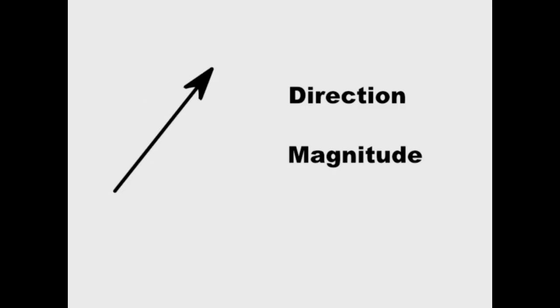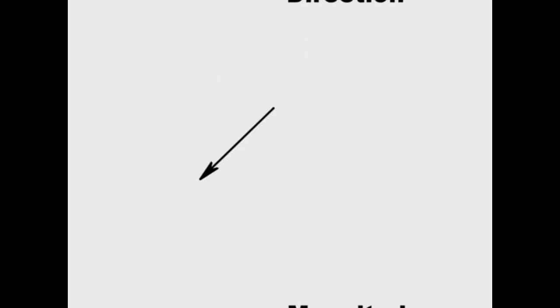Basically, a vector is a number with direction and magnitude. Graphically, this number is represented by an arrow, which has a length that represents the magnitude, and an arrowhead pointing in the corresponding direction. A vector can point in any direction and have any magnitude.